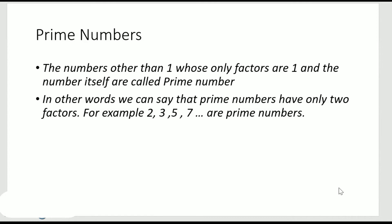Hello everyone. In this video we are going to talk about prime numbers and composite numbers. What are prime numbers? Prime numbers are natural numbers greater than 1 whose only factors are 1 and the number itself. In other words, we can say that prime numbers have only two factors, just two factors.